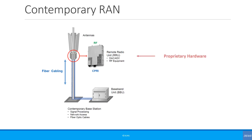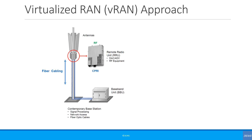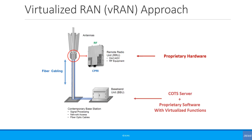In the contemporary RAN, the RRU is proprietary hardware, the BBU is proprietary hardware plus software, and the BBU is often connected to the RRU with proprietary interfaces or signaling, even though it may use the CPRI protocol. With virtualized RAN or VRAN, the proprietary hardware remains as it is, but the BBU gets replaced by a COTS server. The software that runs on the BBU is virtualized to run on any COTS server, while the proprietary interfaces remain. The key point to emphasize here is that VRAN is not Open RAN, as it is not completely open — it still contains proprietary interfaces and purpose-built hardware.